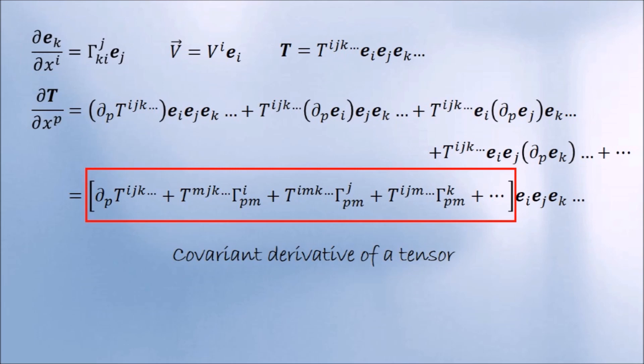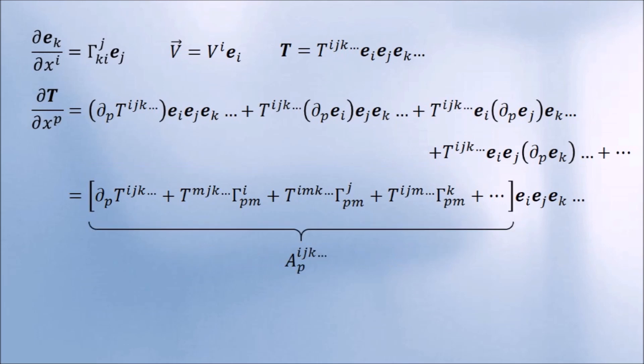But notice something. We now have an object with all the upper indices plus an additional index p, but we only have bases corresponding to the upper indices, which means that this object is no longer an invariant. In order to turn it into an invariant, we must multiply both sides by e upper index p and sum over p.